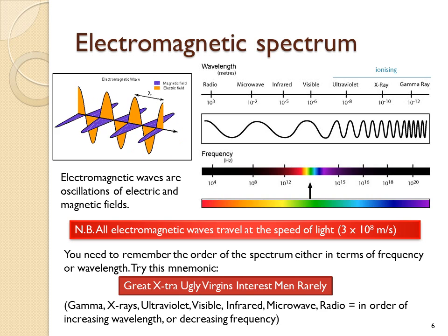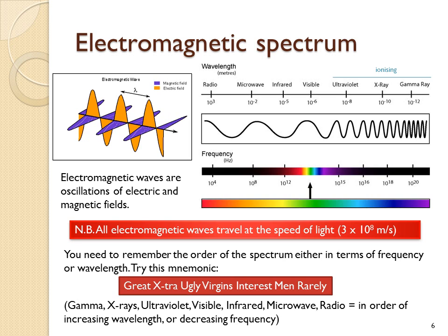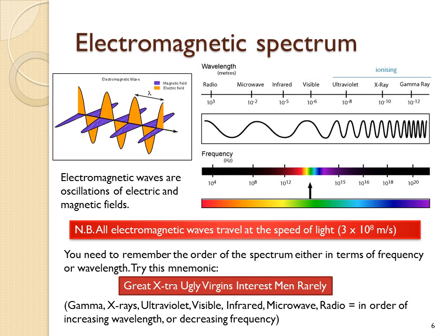Here is a mnemonic that might help you learn the spectrum in terms of frequency. It starts with gamma rays, which are the shortest wavelength, and goes to radio waves, which are the longest wavelength. I can't claim credit for this mnemonic; it was invented by one of my students.